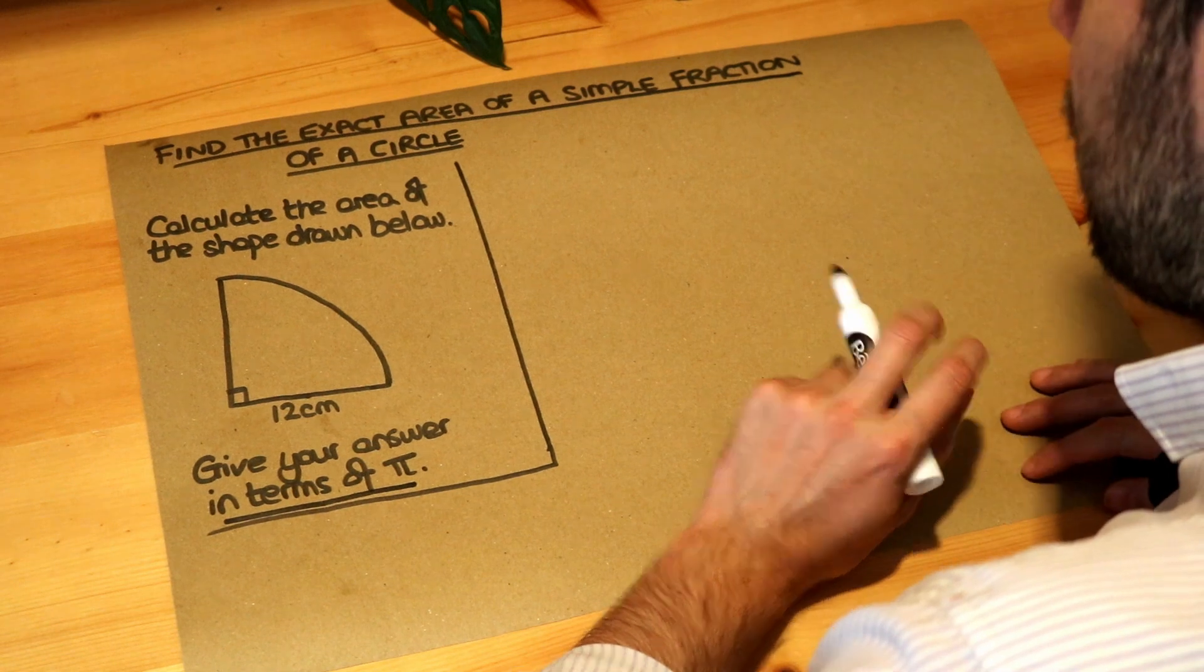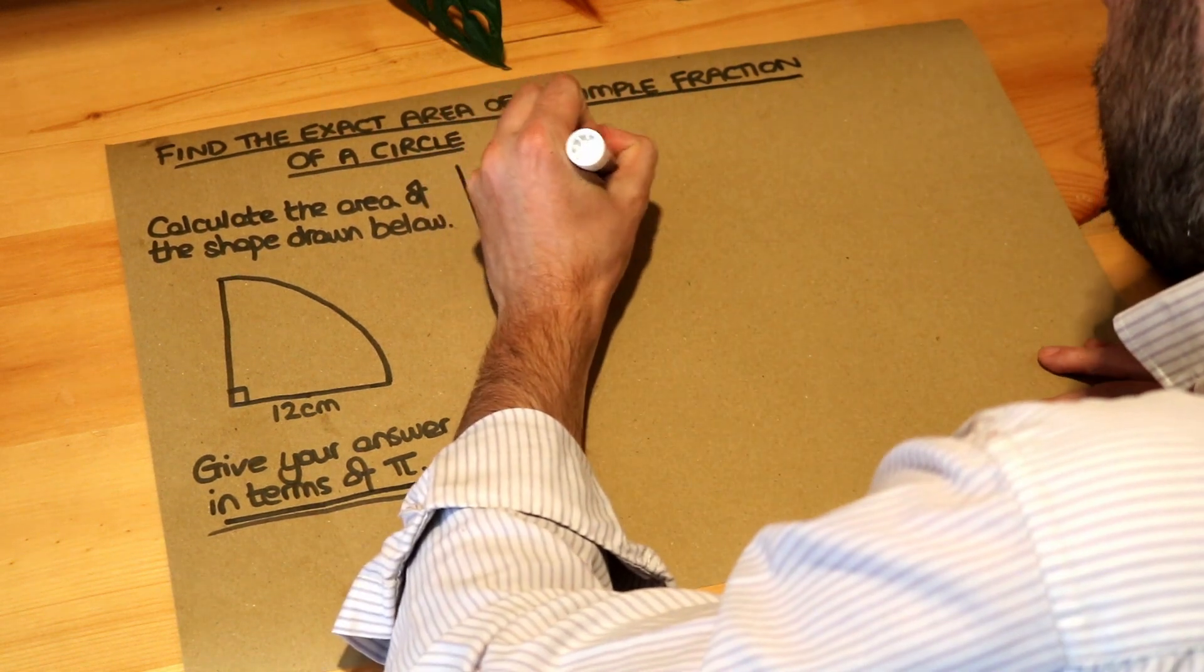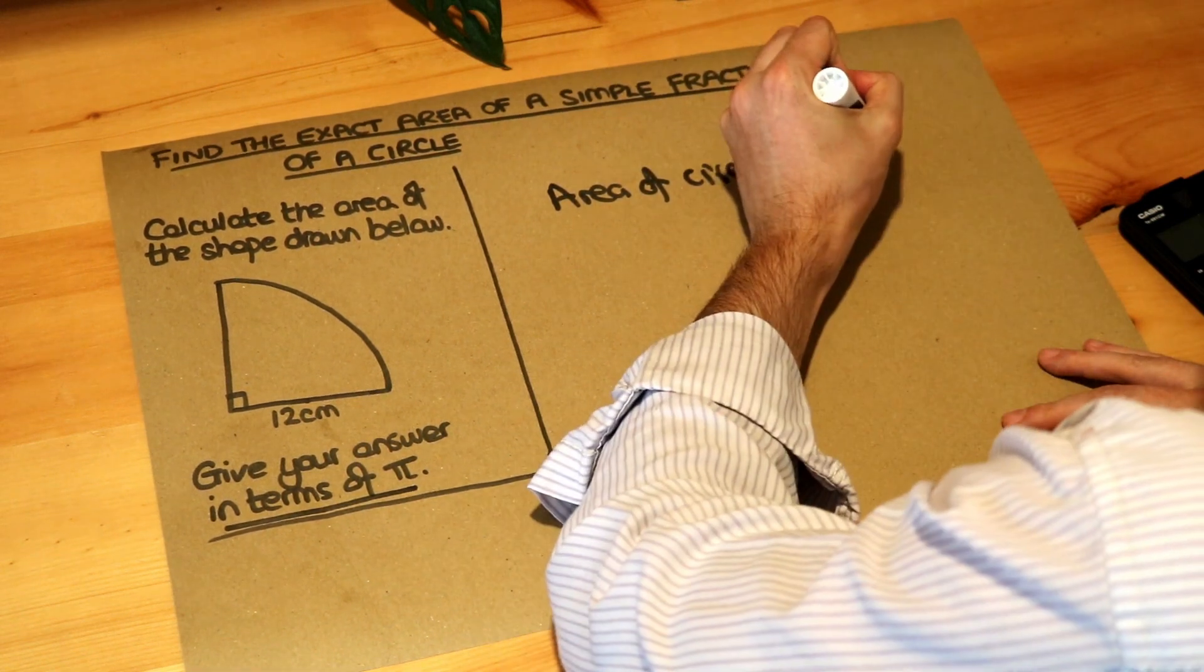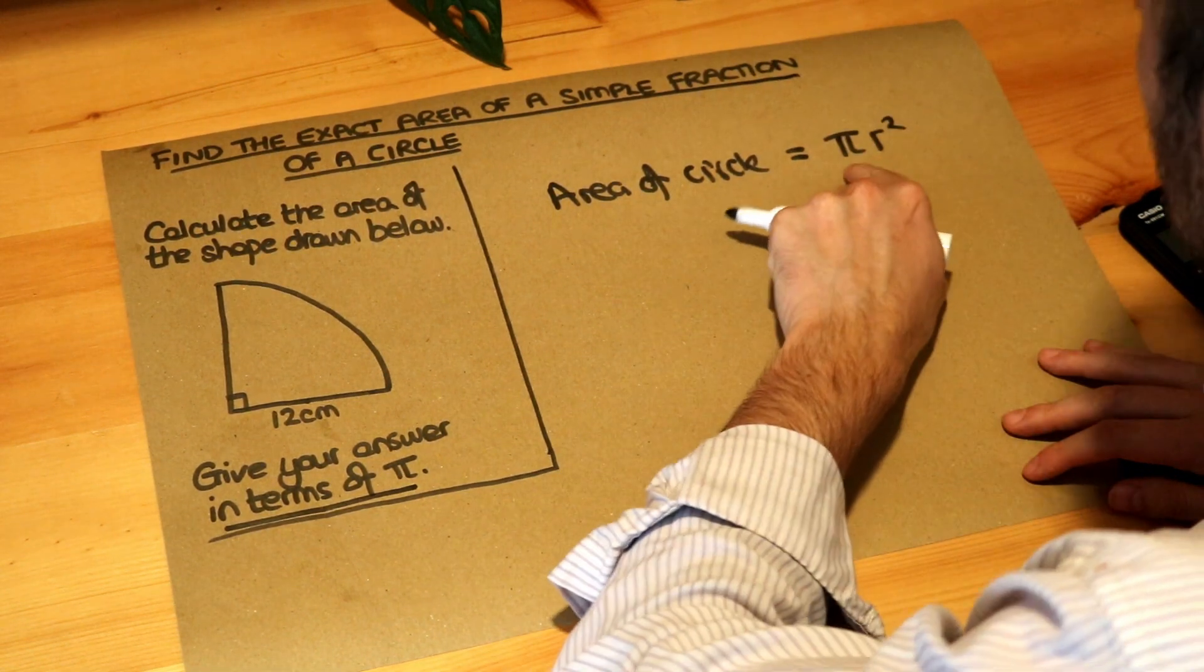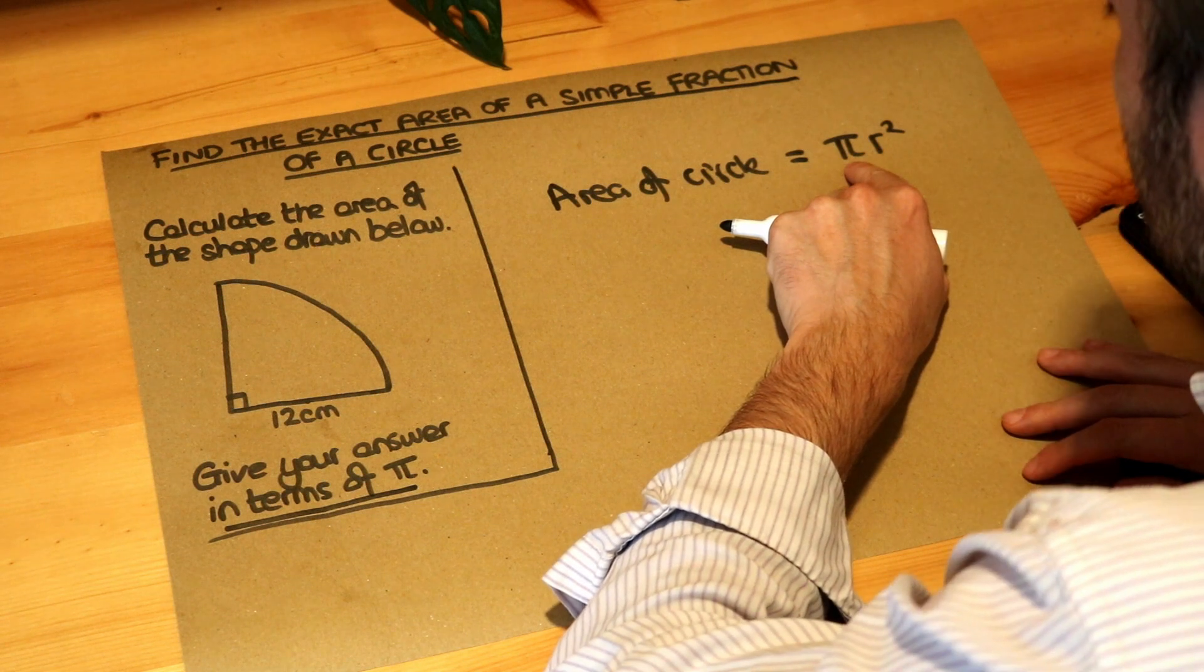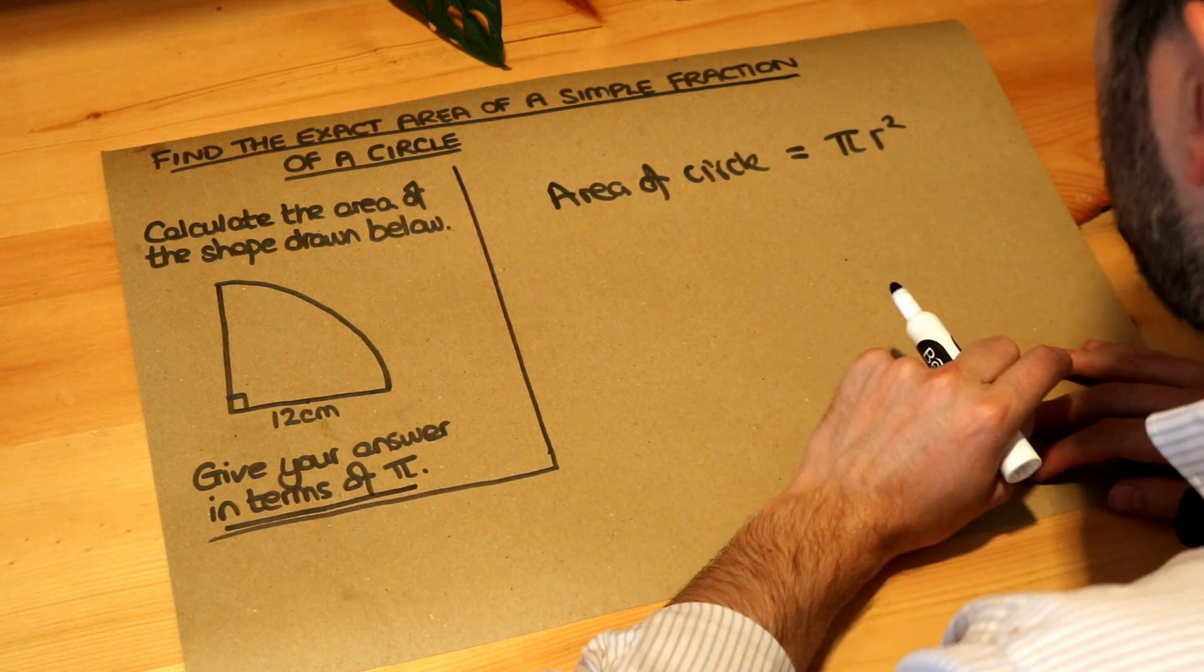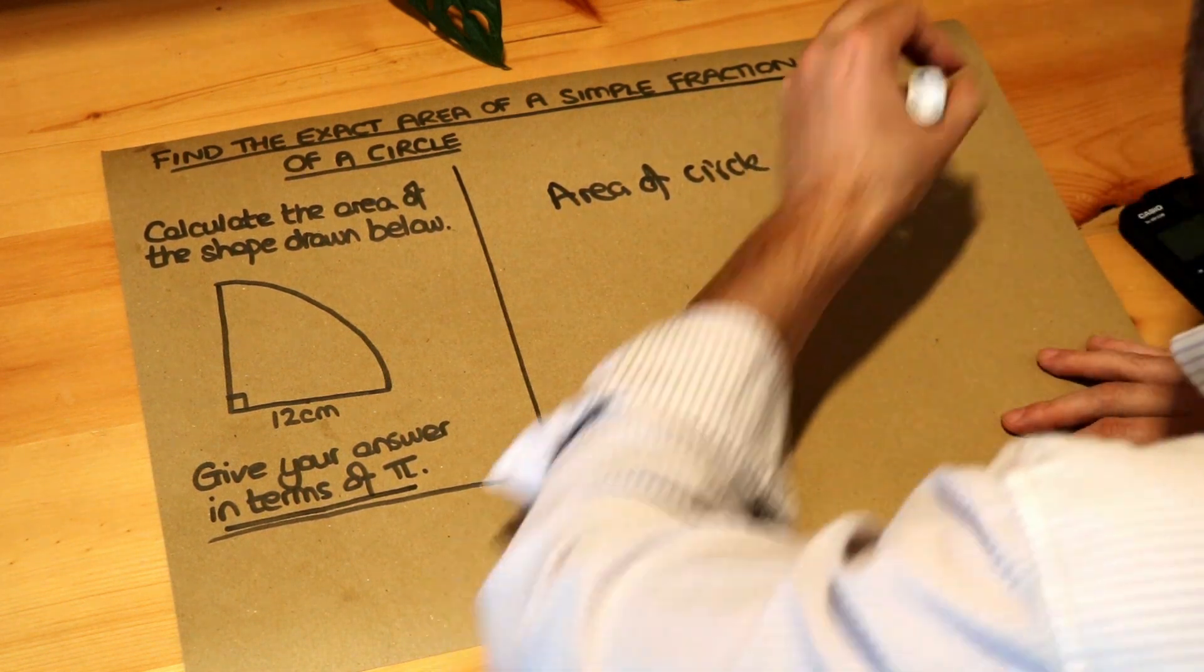Now we previously saw that the area of a circle is equal to pi multiplied by the radius squared. Remember pi was a special number in maths. It has the value 3.141 etc. The digits go on forever. We can find it on our calculator. And r is the radius of the circle.